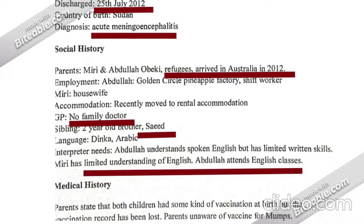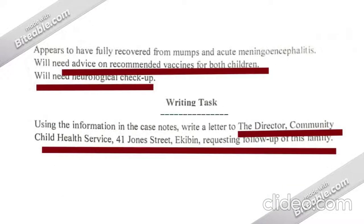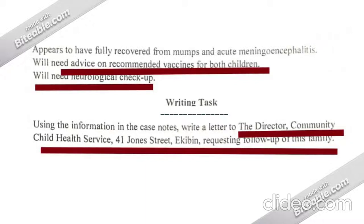The discharge plan states the patient appears to have fully recovered from mumps and acute meningitis, and will need advice on recommended vaccines for both children. This is an exceptional letter because in the recommendation paragraph we have to include both children. We also need a neurological checkup for the baby. From the writing task itself, you can see the follow-up is for the complete family, not only the patient.